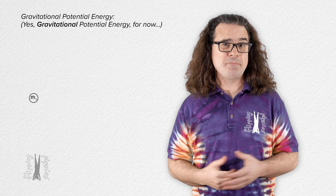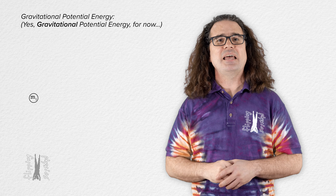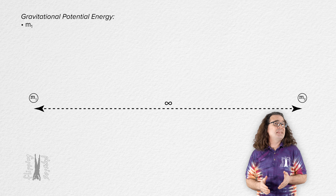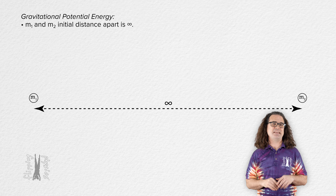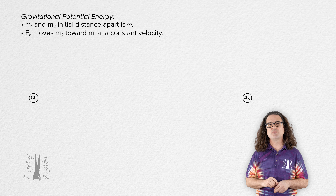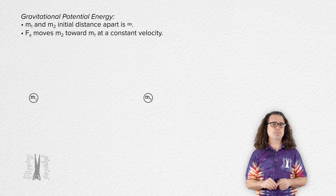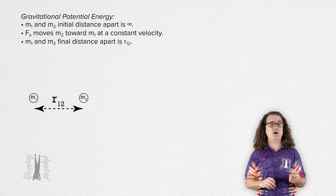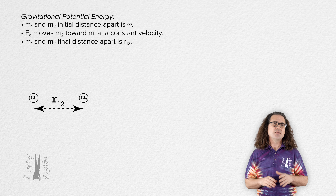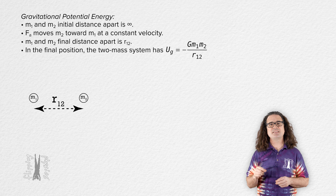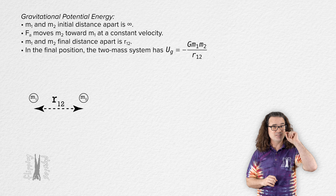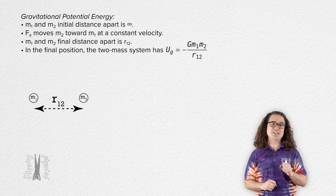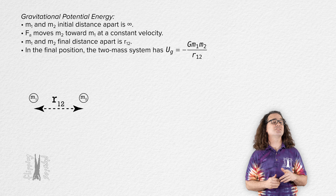Let's say there exists one point mass in the universe and let's call it mass 1. Infinitely far away from mass 1, let's say there now exists a second point mass, mass 2. An external force moves mass 2 at a constant velocity such that the final distance between the two point masses is r₁₂. That two-mass system now has a gravitational potential energy which equals the negative of the universal gravitational constant times mass 1 times mass 2, all divided by distance r₁₂.